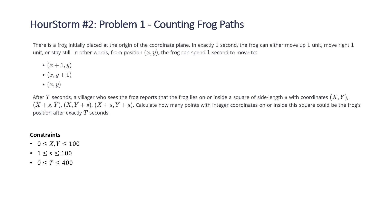The problem states there is a frog initially placed at the origin of the coordinate plane. In exactly one second the frog can either move up one unit, move right one unit, or stay still.